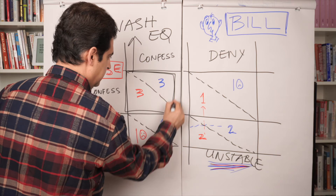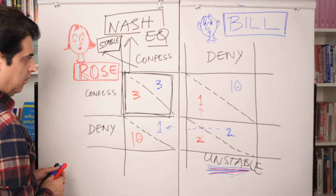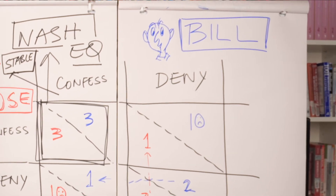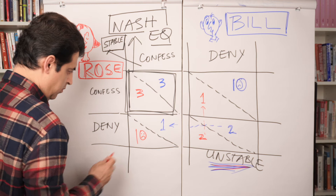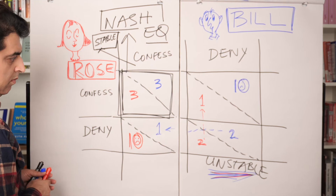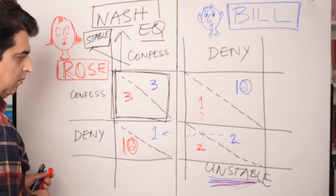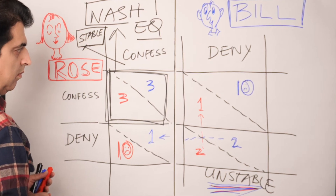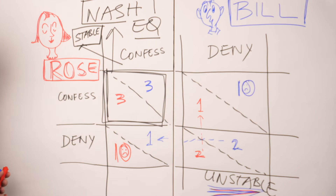Let's get into Bill's head and see how he is thinking. He reasons: I don't know whether Rose is confessing or denying. If she is confessing, then I must confess to restrict my jail term to 3 years — if she confesses and I deny, my jail term could move up to 10 years, which is quite a risky proposition. If she denies and I confess, my jail term would be only 1 year. But how can I be sure what she is thinking? Under all probabilities, I am better off confessing.